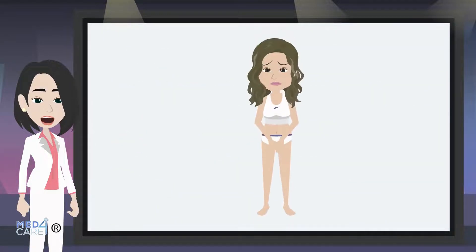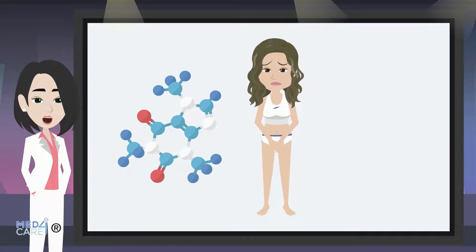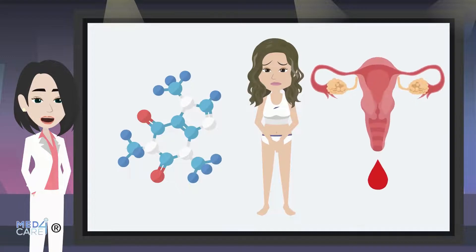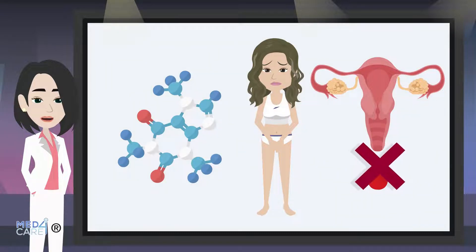Any pathological modification along this whole axis of hormonal signaling can therefore easily lead to an alteration of the ovarian cycle and amenorrhea.